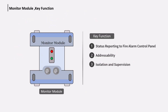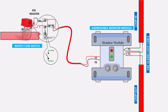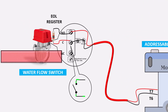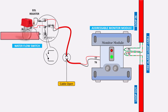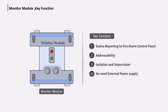Third, isolation and supervision — when the monitor module is connected with devices, an EOL resistor connects. This resistor performs the function of line supervision, meaning if there is an open or short in the wire between the monitor module and devices, it observes and indicates a fault. Fourth, no need for an external power supply — the monitor module doesn't require any external power supply.